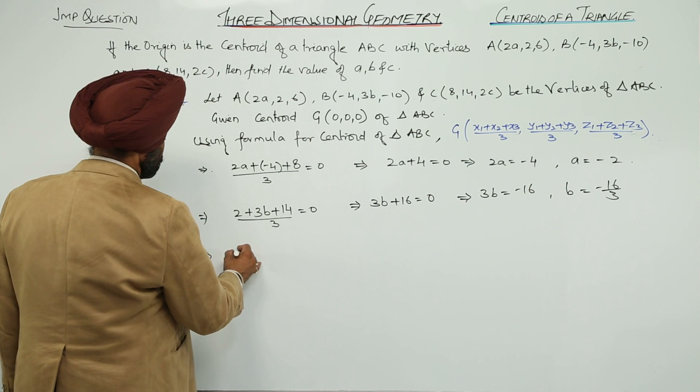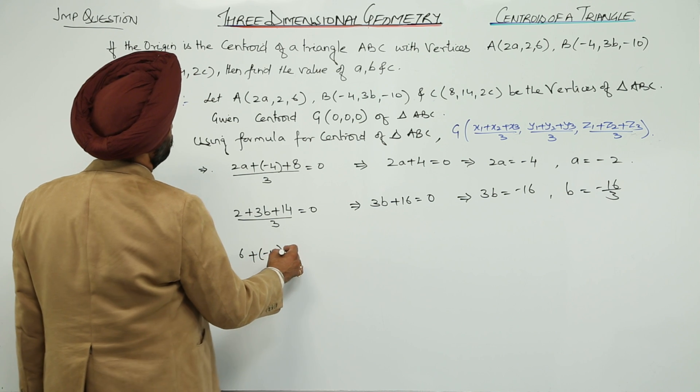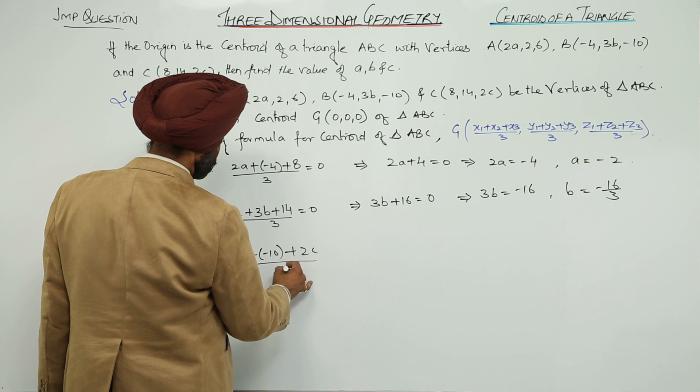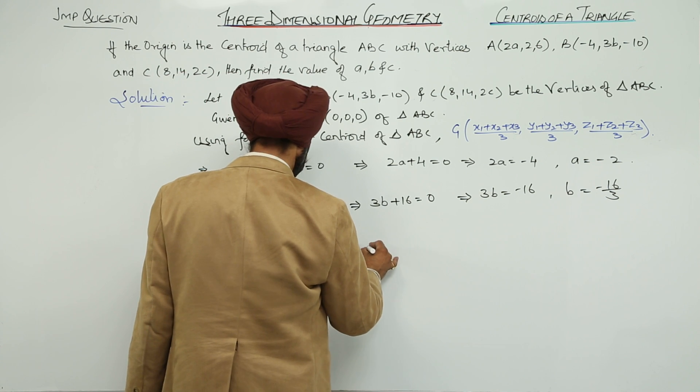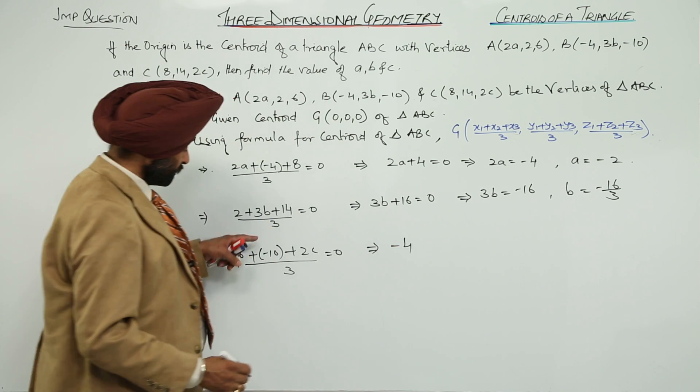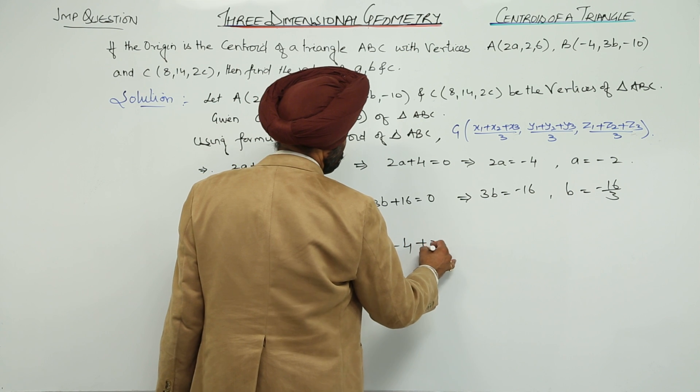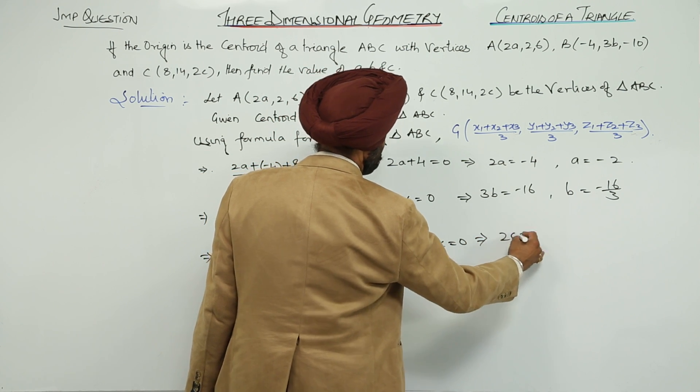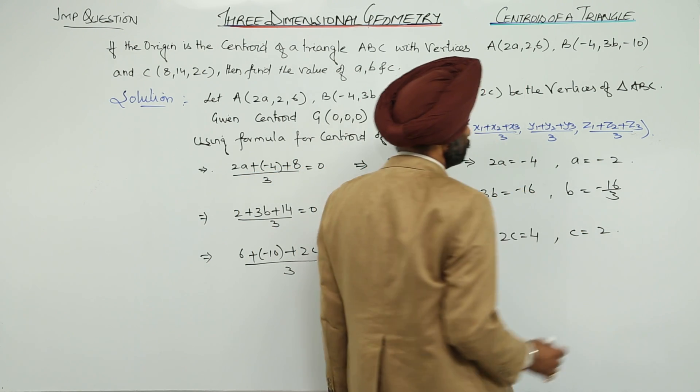Third, (6 + (-10) + 2c)/3 = 0. Solving, -4 + 2c = 0, so 2c = 4, therefore c = 2.